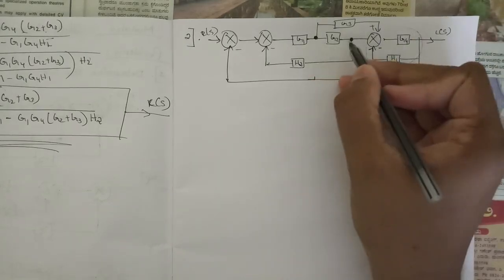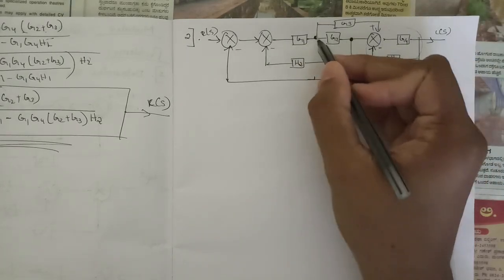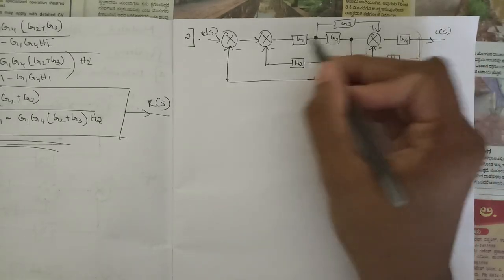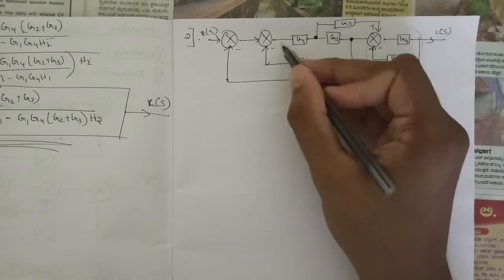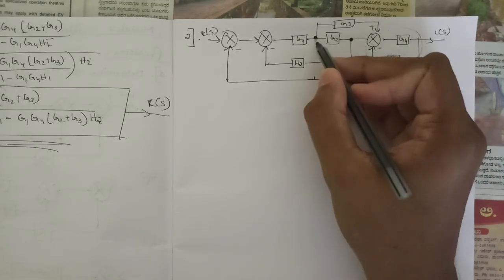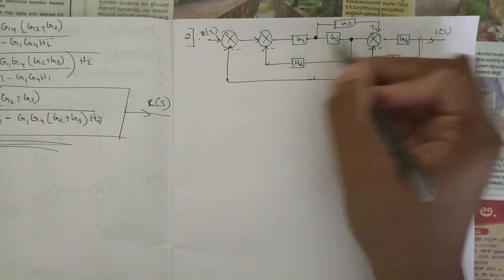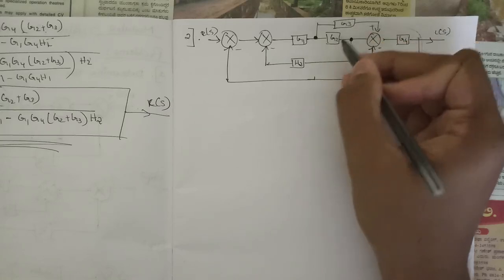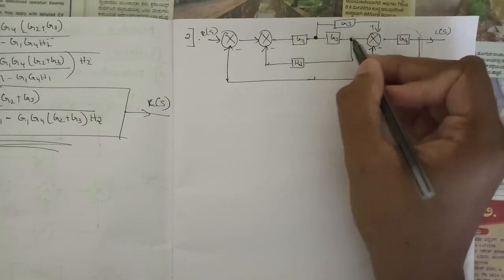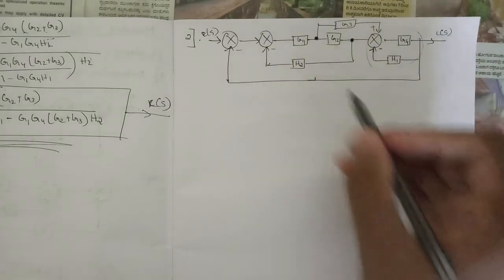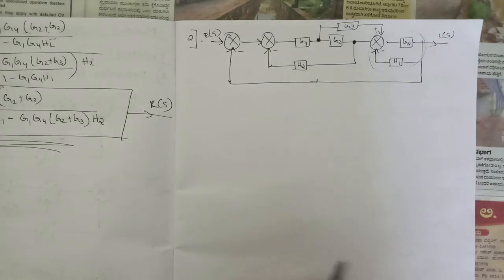If we shift the takeoff point to the right-hand side of the block, we can say those two are in series and multiply them up, and we'll again have a minor loop to reduce. Alternatively, if we shift the takeoff point to the left-hand side of the block, we can say those two are in parallel and add them up, write a single block, and those remaining two are then in series — we multiply them up, and after that reduce using the minor loop. These are the simplifications you need to know before solving this.